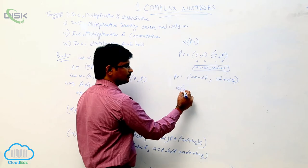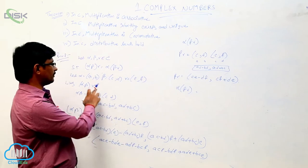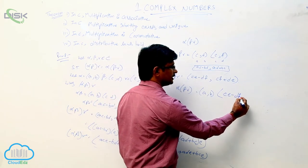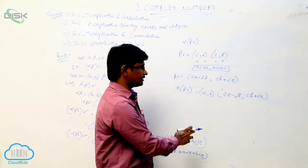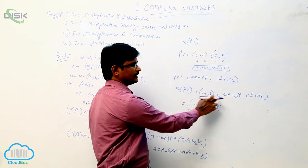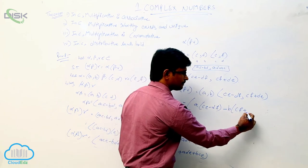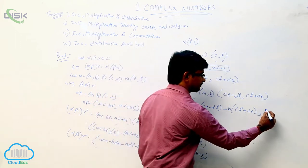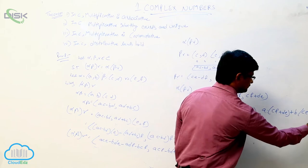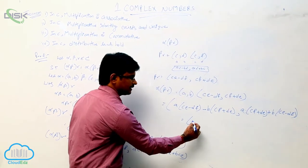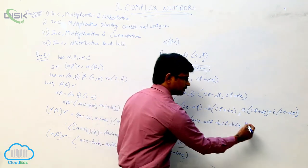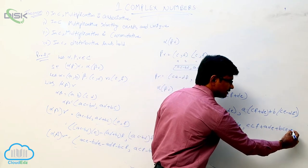Now we will find out alpha into beta gamma. Alpha value is (a, b). So alpha into beta gamma is (a, b) into (ce minus df, cf plus de). Applying the multiplication property, we get: ace minus adf minus bce... expanding fully: ace minus bde minus adf minus bcf, comma, acf plus ade plus bce minus bdf.